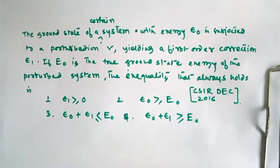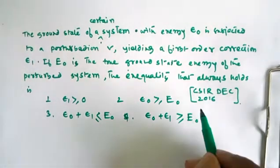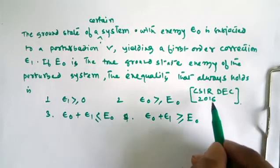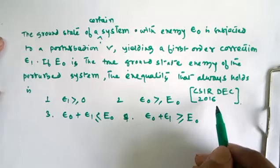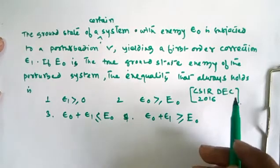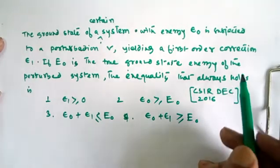Hi guys, welcome once again. Today we will discuss a question from quantum chemistry perturbation theory that comes in CSN December 2016. The question states that the ground state of a certain system with energy E epsilon node is subjected to a perturbation.